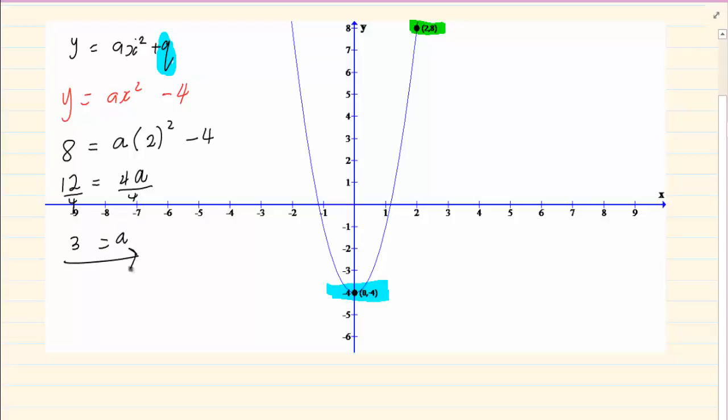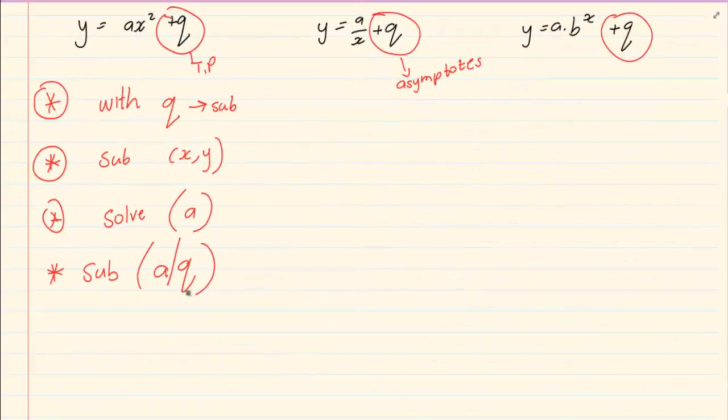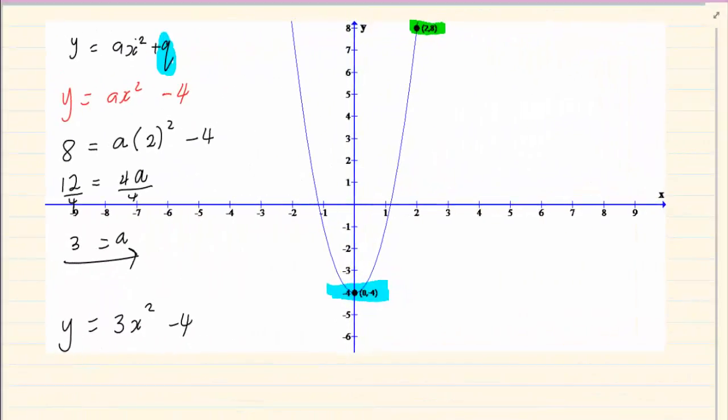Now, when you do this, you have to rewrite the equation. So the equation is y equals 3x squared minus 4. Remember when I said rewrite it, you only rewrite a and q. So we've got y equals 3x squared minus 4. Let's take another example.